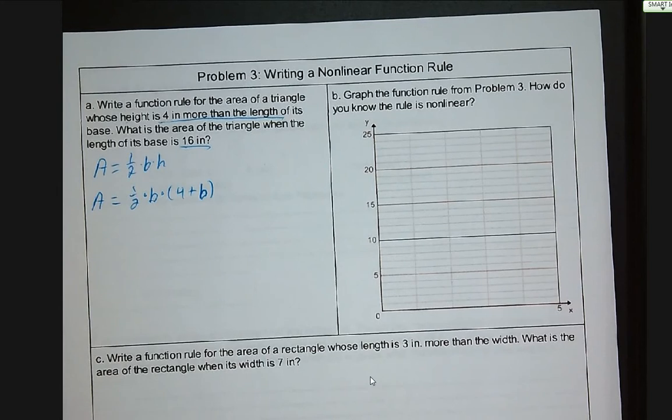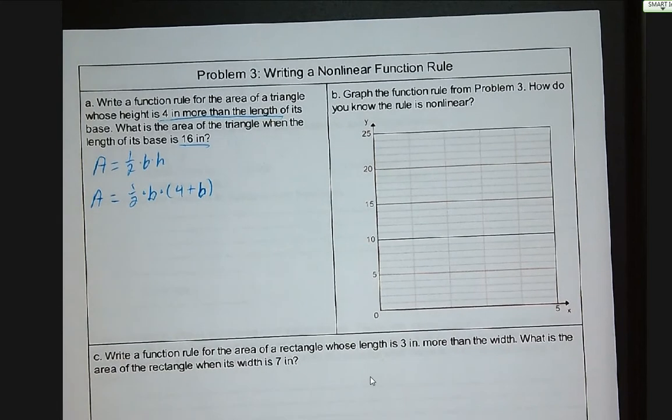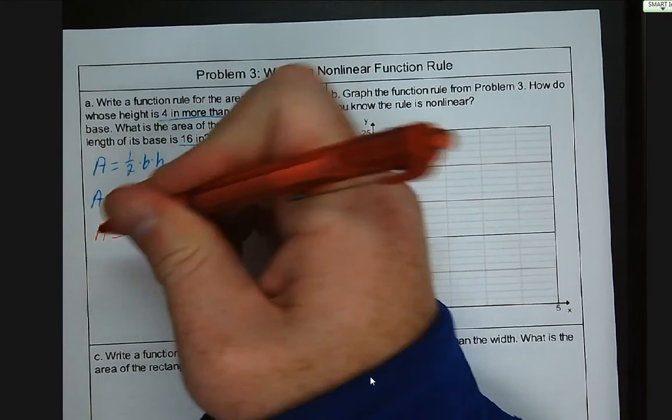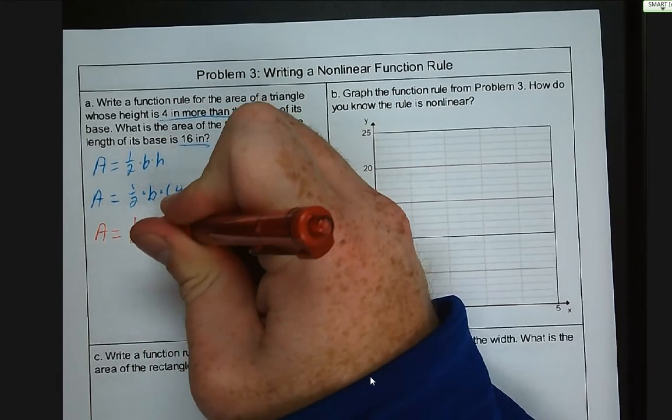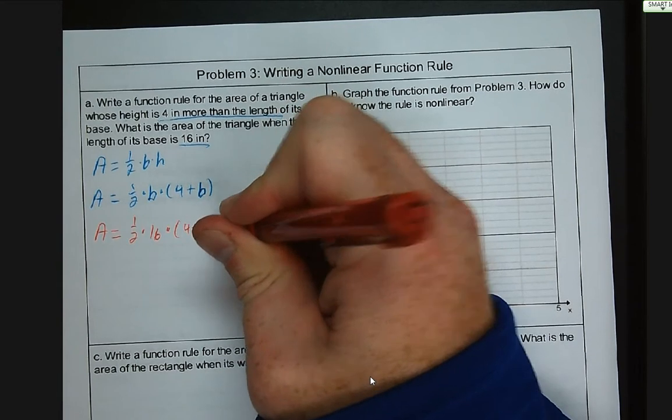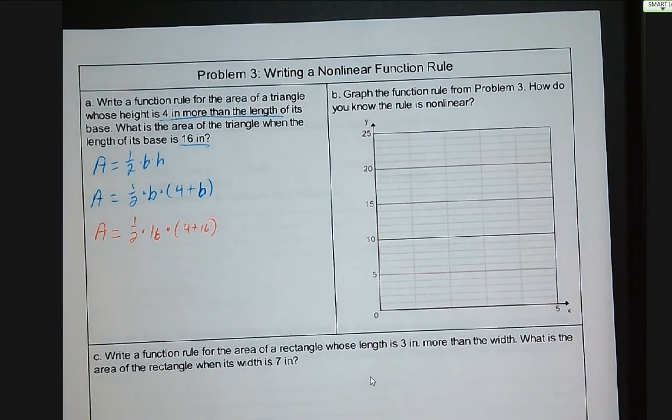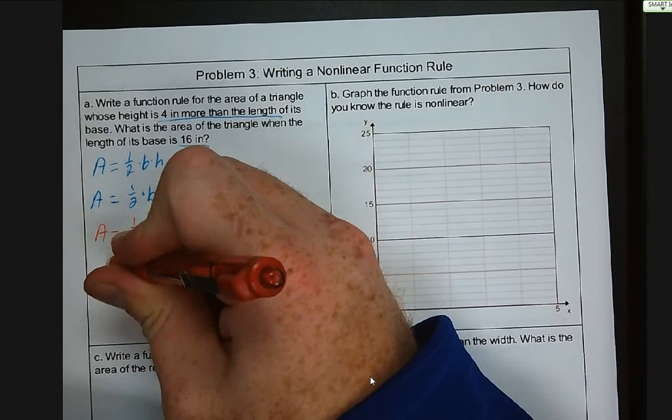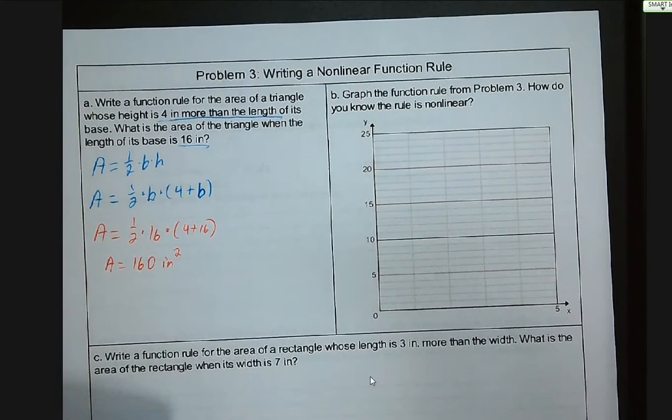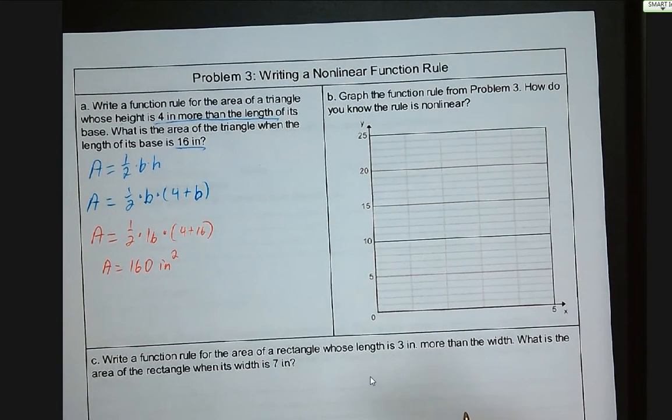So when we plug in 16 for our base, the area is equal to one half times 16 times four plus 16. And when we type that out, we've got 160 square inches because it's area.